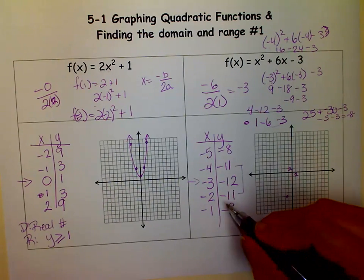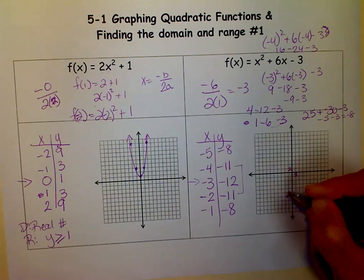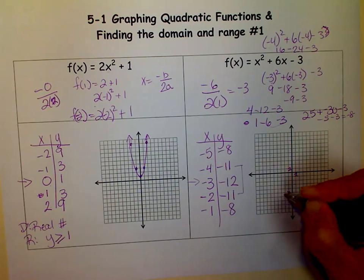And then if I graph negative 2, negative 11, that's negative 2. 2, 4, 6, 8, 10. Oh sorry, it's 11. Excuse that little point. That's not there.